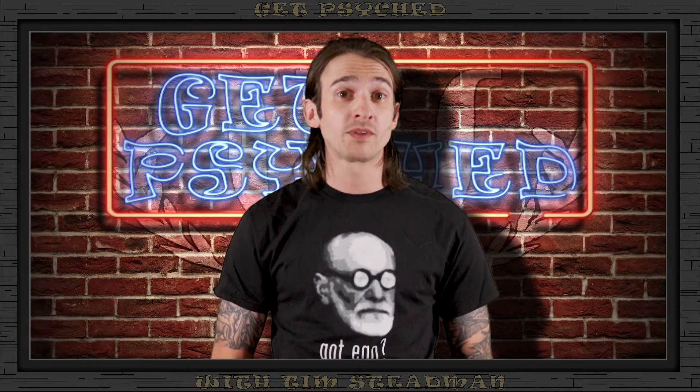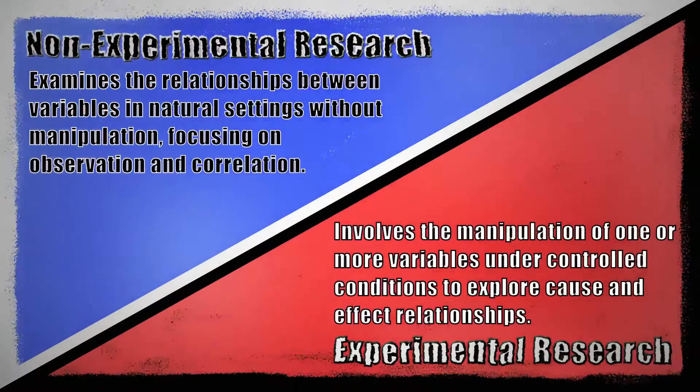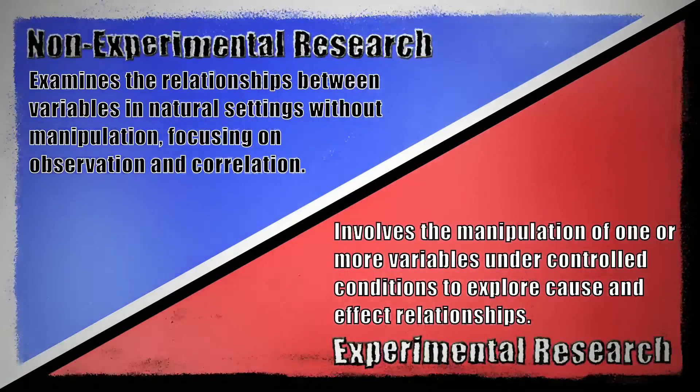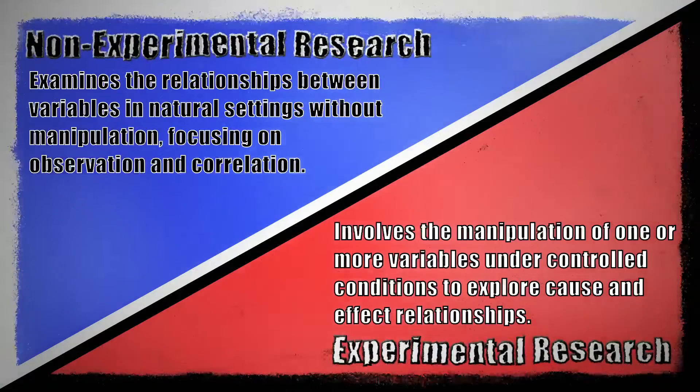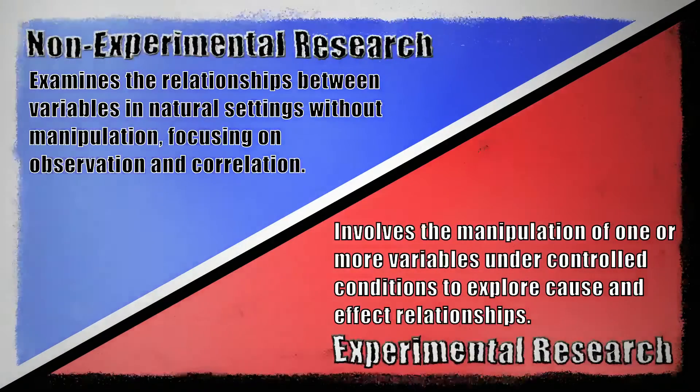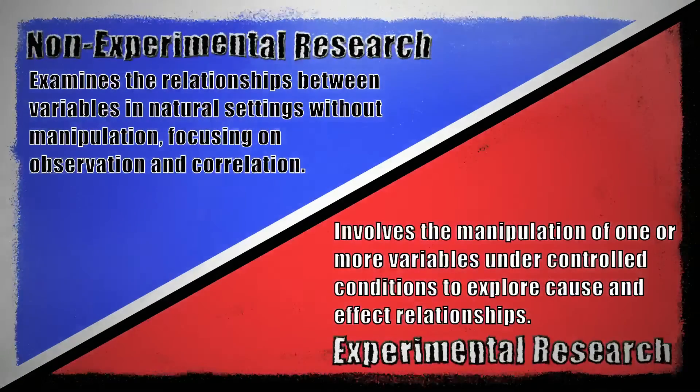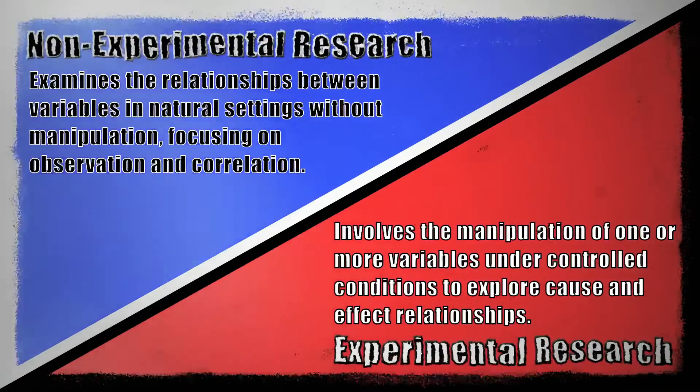In psychology, research methods fall into one of two broad categories: experimental research and non-experimental research. Experimental research manipulates variables to try and prove a cause-and-effect relationship, while non-experimental research examines the relationship between variables in a natural setting with no manipulation. Let's talk about the specifics of experimental research using an example — pretend we are conducting an experiment on the relationship between a new sleep medication and how well-rested it makes people feel.